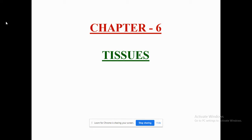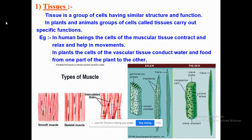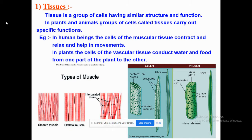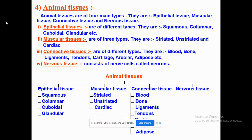Today we are going to do chapter number 6, Tissue, and in this video we are going to cover topic number 2, that is animal tissue. We know what tissue is — it is a group of cells having a similar structure and similar function. In plants and animals, the group of cells called tissue carries out a specific function.